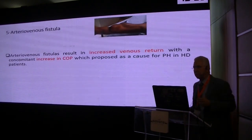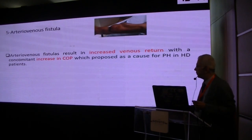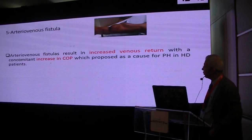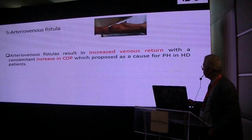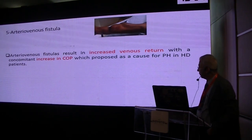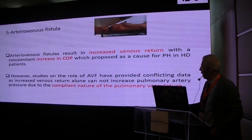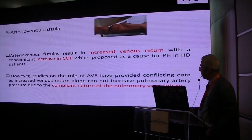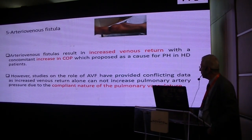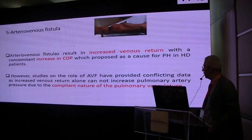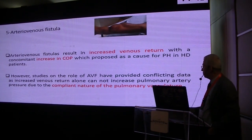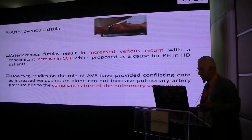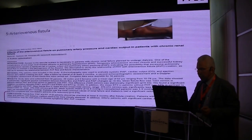Now we come to a very important issue: arteriovenous fistula in patients with pulmonary hypertension. The arteriovenous fistula results in increased venous return with concomitant increase in cardiac output, which has been proposed as a cause of pulmonary hypertension. However, studies on the role of the arteriovenous fistula have provided conflicting results among patients with CKD and dialysis and their impact on pulmonary hypertension. Some propose that the compliant nature of the pulmonary artery suggests the AV fistula may not be the cause.